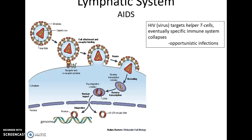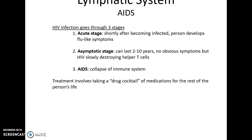AIDS is caused by a virus called HIV — Human Immunodeficiency Virus — that targets the helper T cells. It infects helper T cells, stops them from functioning properly, and takes them over to produce more HIV. This leads to a collapse of the person's specific immune response. However, this doesn't directly kill the person — what kills the person are opportunistic infections that take advantage of the reduced immune system. HIV infection progresses through three stages: the acute stage, with flu-like symptoms shortly after infection; an asymptomatic stage lasting two to ten years with no obvious symptoms, during which HIV slowly destroys helper T cells; and finally AIDS itself, the collapse of the specific immune system, which eventually leads to death by opportunistic infection.